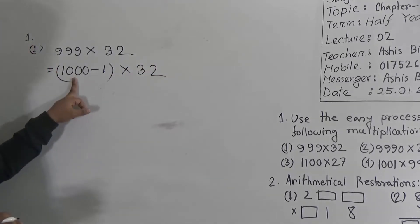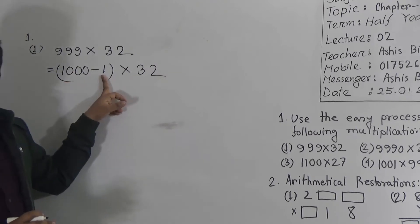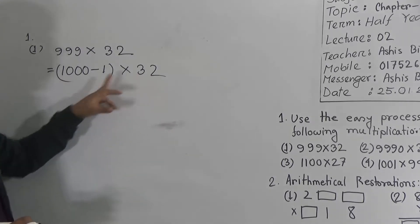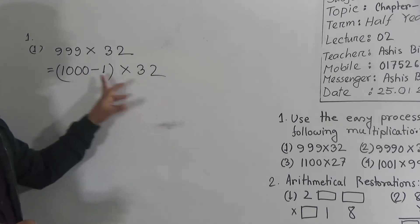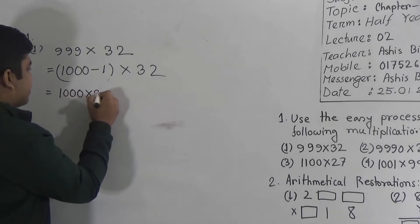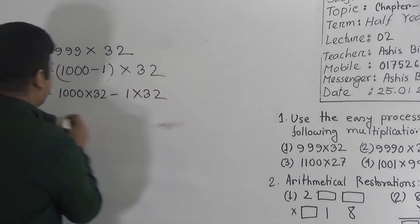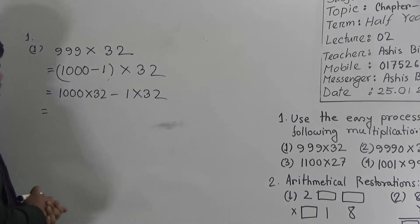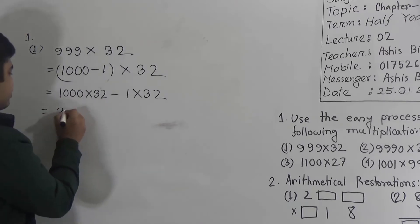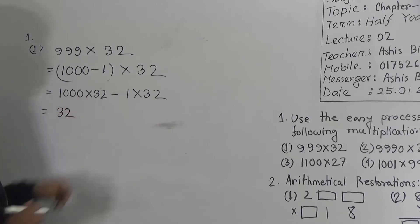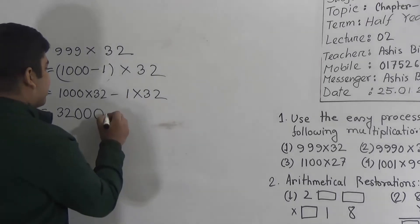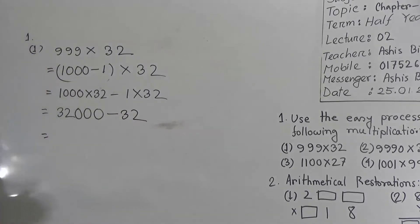Suppose 1000 is one brother and 1 is another brother, and 32 are the chocolates. So 32 is distributed between both brothers. That means 32 is multiplied with 1000 and 32 is multiplied with 1. So now we compute: 1000 multiplied by 32 minus 1 multiplied by 32. We use simple multiplication: 32 multiplied by 1 gives 32, and we write 3 zeros — giving 32,000. Then 1 multiplied by 32 gives 32. We subtract 32 from 32,000.